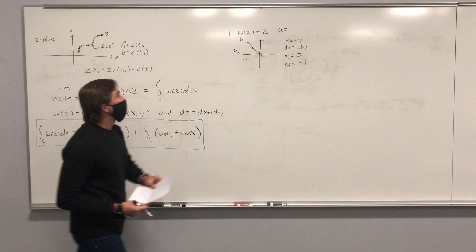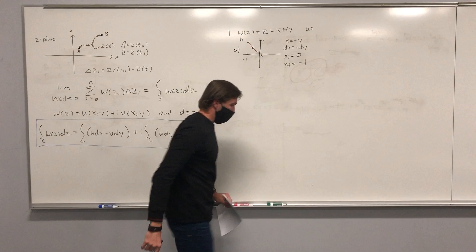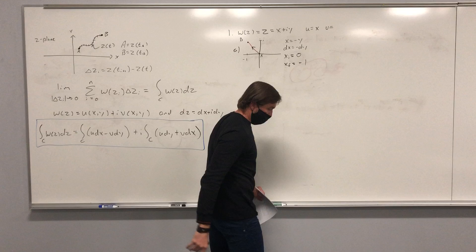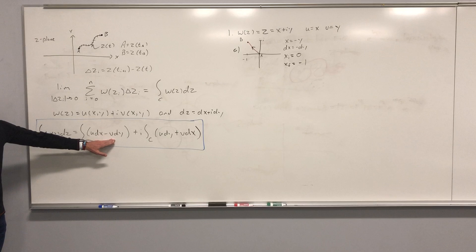What is U? Z is X + iY. What is U? It's just X. What is V? It's just Y. So now we take all that and plug it into the formula — it's that straightforward.